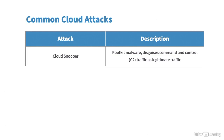Other common cloud attacks include cloud snooper attacks, which often happen due to a rootkit infection on something running in the cloud like a Linux virtual machine. The attacker tricks a user into installing rootkit malware on a VM, and that malware is programmed to periodically reach out to the internet to retrieve commands — command and control (C2) traffic — which can be disguised as legitimate traffic such as DNS client query traffic.